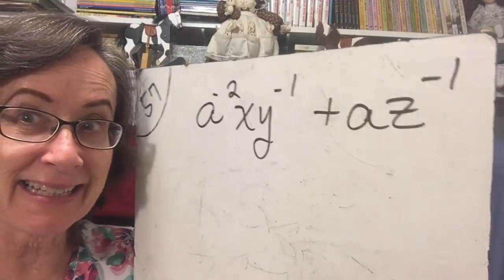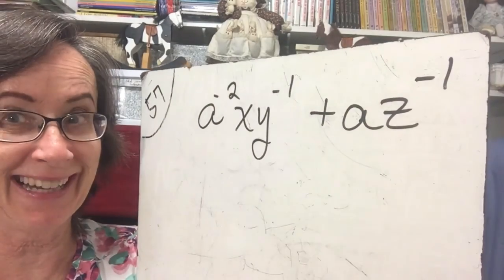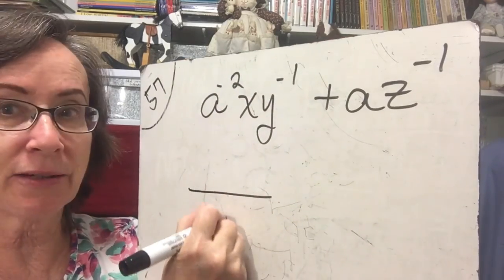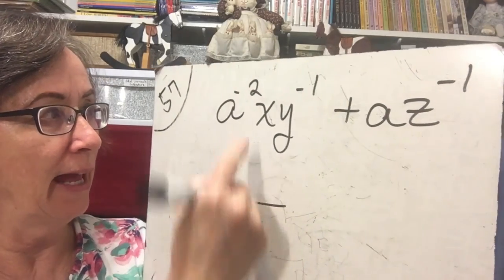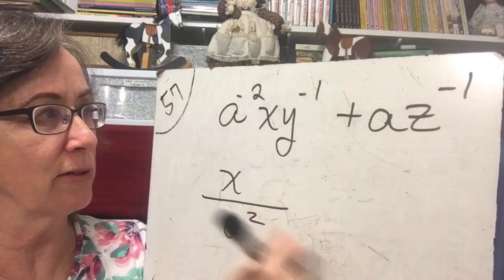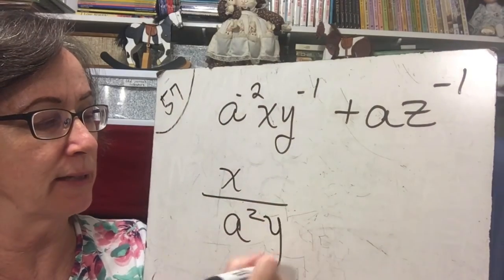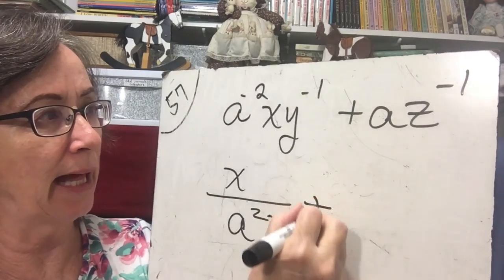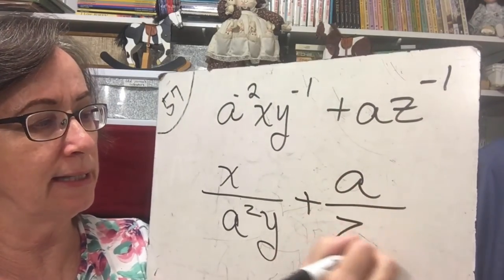Okay, here is our last example before we do our practice problems. This is a short lesson, isn't it? Okay, so a to the negative 2 is going to go downstairs. x will stay upstairs. y will go downstairs because the negative exponent sends it down plus a over z.